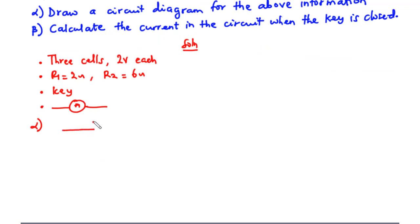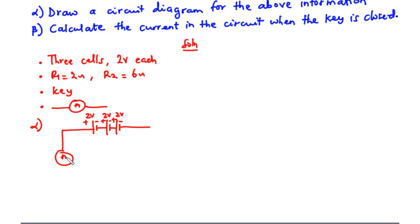We have three cells connected in series, each of 2 volts EMF. The longer side is the positive terminal and the shorter side is the negative terminal of the voltage source. The voltage source is connected to the ammeter, and then to the two resistors connected in series — 2 ohms followed by 6 ohms — and then also we have the key.